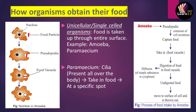Next we discuss how organisms obtain their food, focusing on amoeba. On the right side there is a stepwise diagram of how amoeba takes in food, and on the left is the diagrammatic representation. Amoeba uses pseudopodia to take in food. It is a unicellular organism and uses pseudopodia to move and extend its cell membrane to capture food nearby.